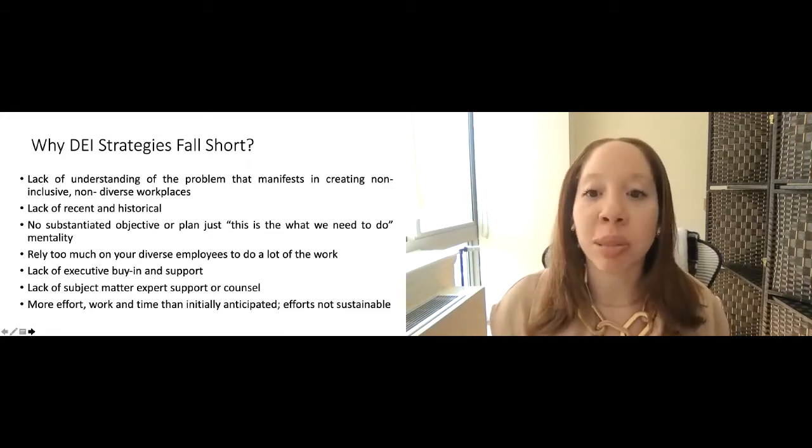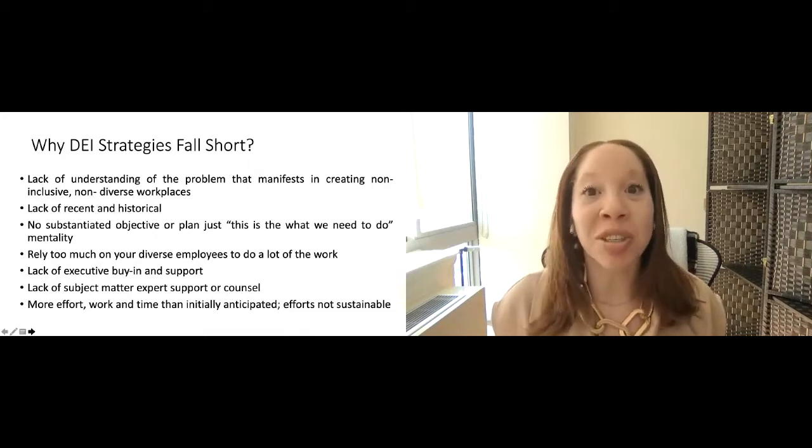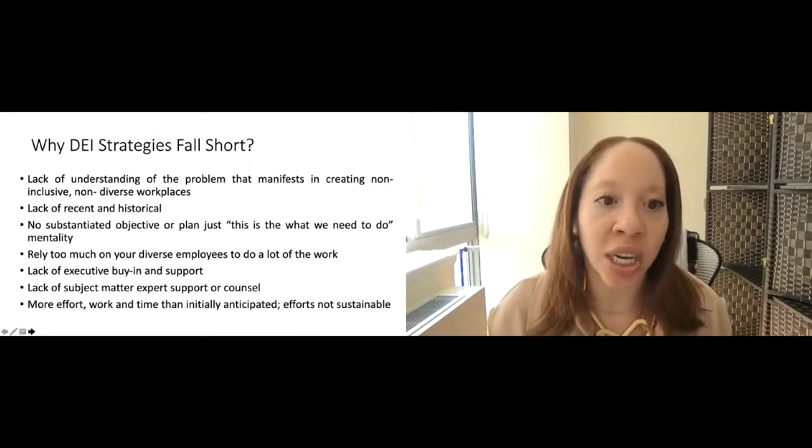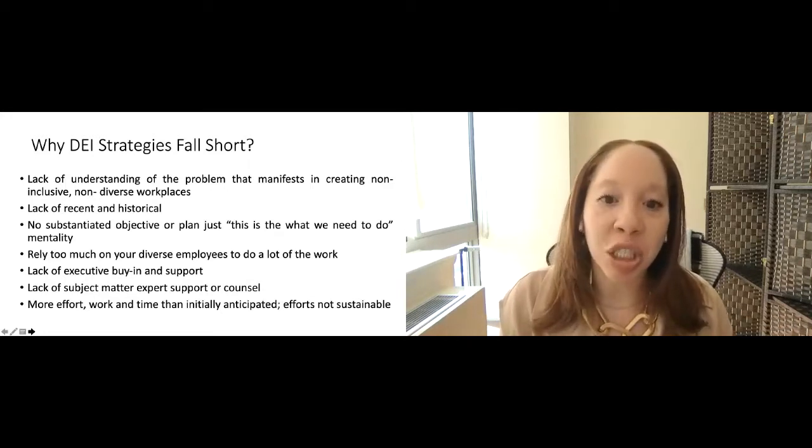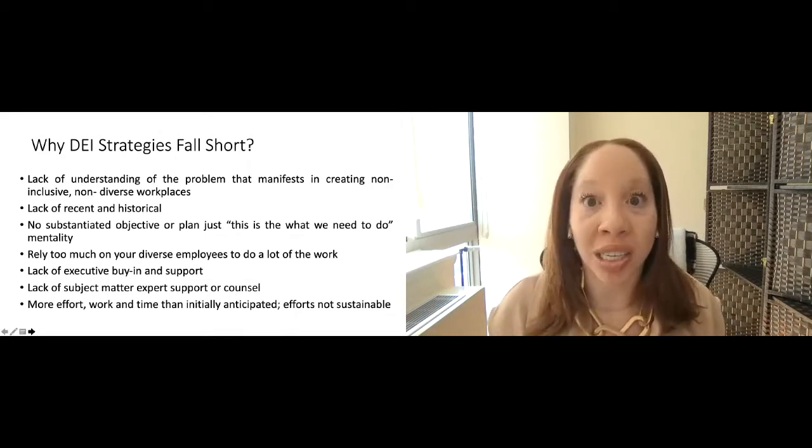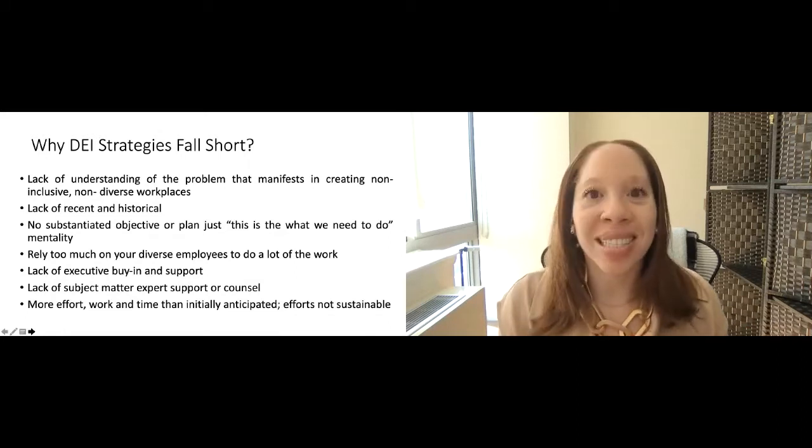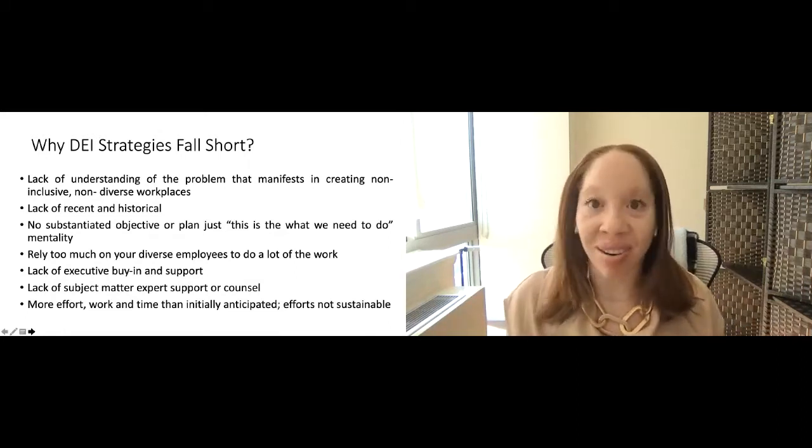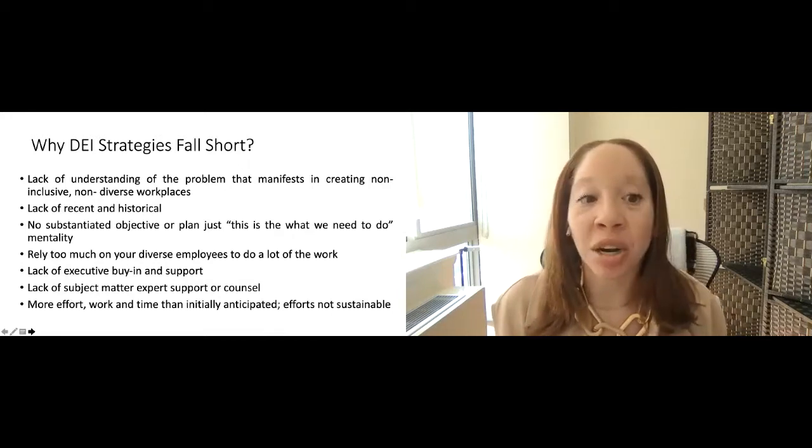We rely too much on our diverse employees to do a lot of the work, which happens in a lot of organizations. We go to them to say, create your D&I strategy, create a plan, create training. And you have to remember, these are your employees that have come to do a specific job. So when you then put the additional work of asking them to now carry out a D&I strategy, you have to realize the magnitude and the weight of what you're asking them. There's a lack of executive buying and support, lack of subject matter expertise, support, and counsel, which then makes the work that much more harder to lift off and be sustainable. And more effort, work, and time than initially anticipated, and efforts are not sustainable. I always say that within your D&I journey, it is a marathon, not a race. So it's so important that you take the time, understand what you're doing, and the timeline it's going to take to get it done correctly.